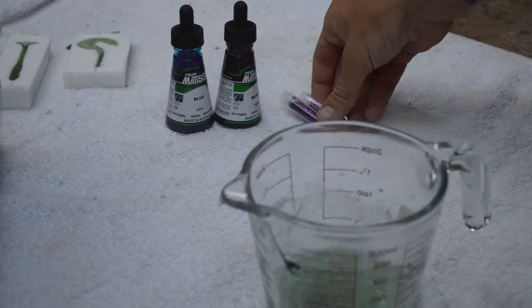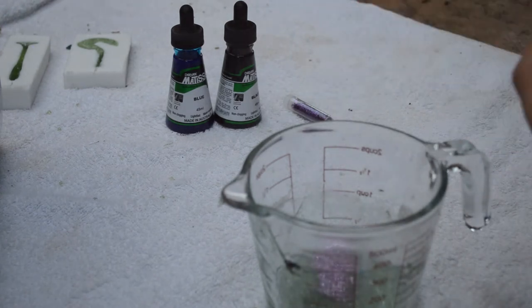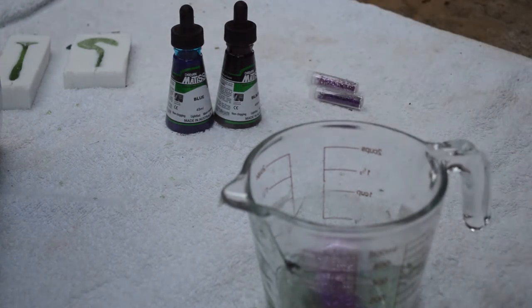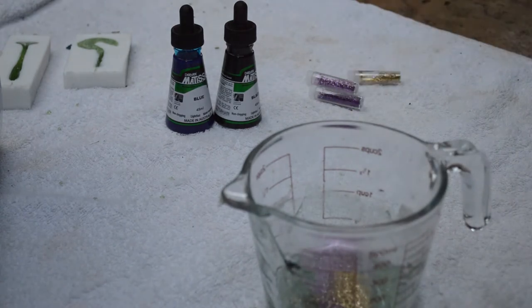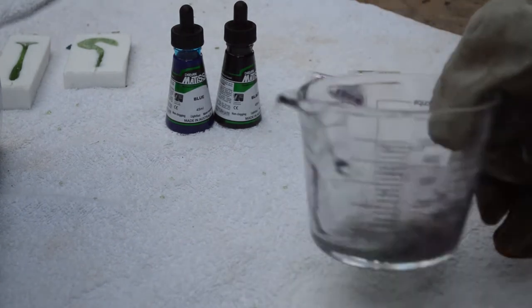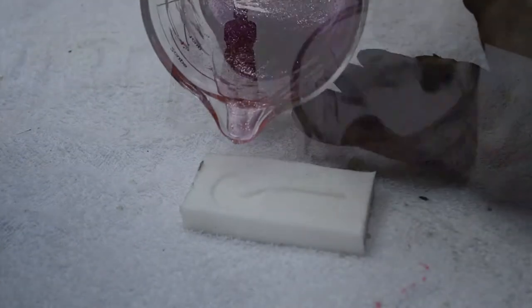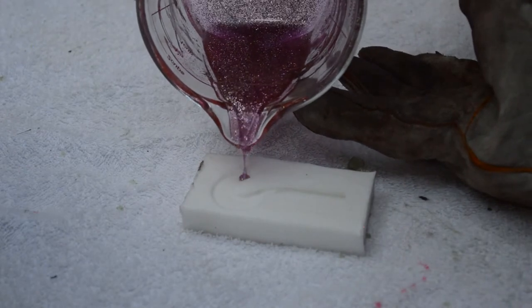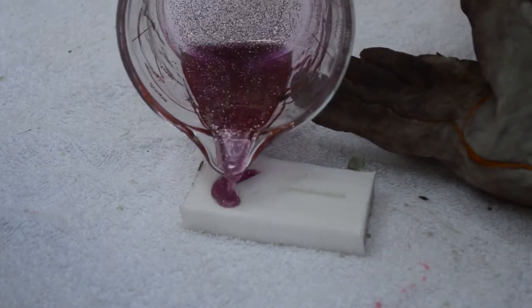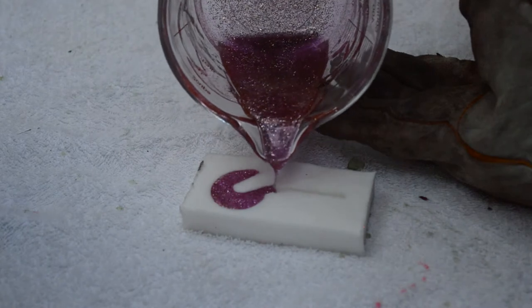Either choose to use glitter or some acrylic inks to colour your soft plastics. Once you have made your soft plastic, you can then reheat the Plastisol on 30 second bursts until it is liquid again and add more colour as you wish.